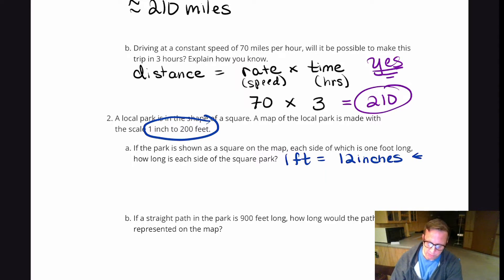So on the map, it's 12 inches. So you're going to do 12 times 200, and that's going to be 2,400 feet.